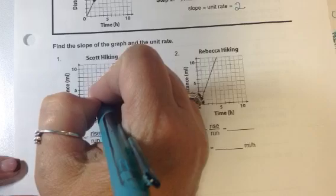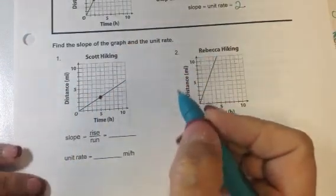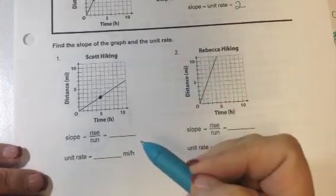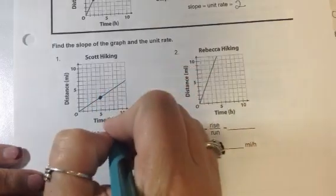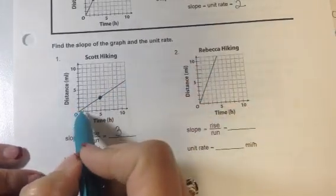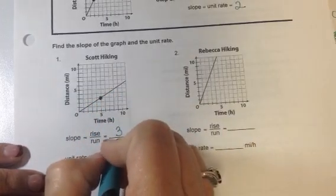If I look here, I'm going to go here, and Scott is hiking, and we want to know how much he hikes an hour. So we're going to say 1, 2, 3, and that's our rise. And then we're going to say 1, 2, 3, 4, 5. That's our run.